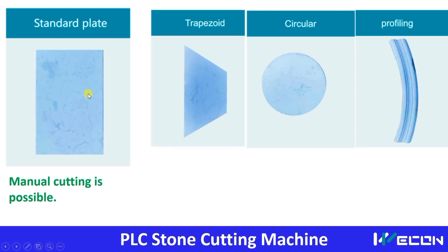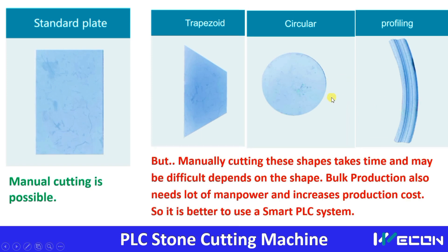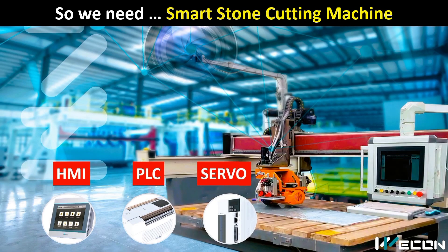This is one standard plate or standard shape, so manual cutting of this is possible. But when you want shapes like this, manual cutting is a little difficult and we can't achieve the same shape. When we want to do mass production, it's better to use this smart stone cutting machine. Manually cutting these shapes with such accuracy is time-consuming and also requires highly skilled manpower. This is the reason we need this smart stone cutting machine which has HMI, PLC, and servos.